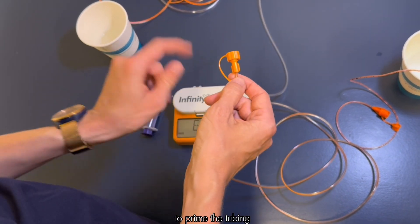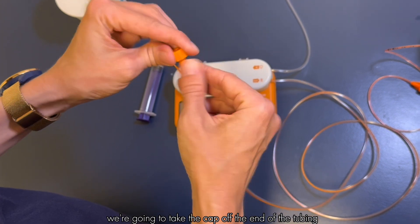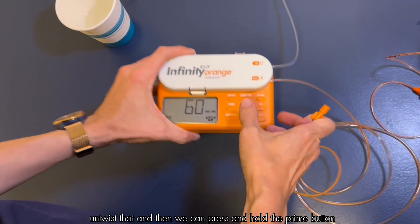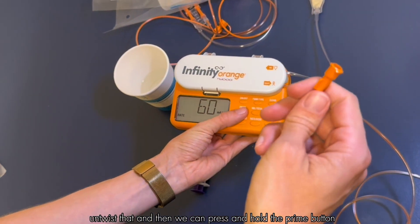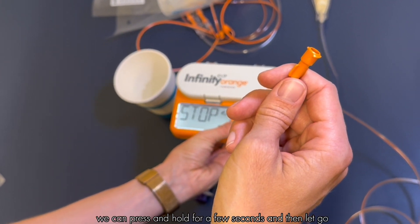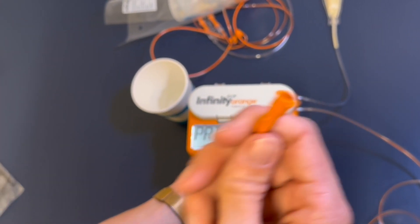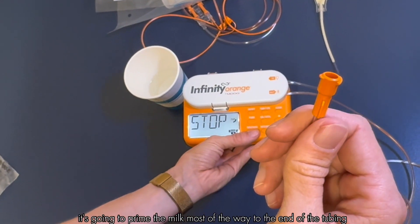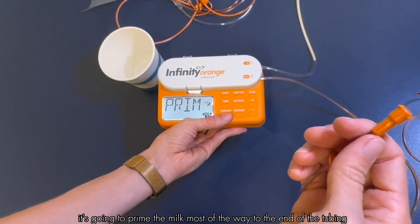To prime the tubing, we're going to take the cap off the end of the tubing, untwist that, and then we can press and hold the prime button. We can press and hold for a few seconds and then let go. This pump has auto prime enabled so it's going to prime the milk most of the way to the end of the tubing.